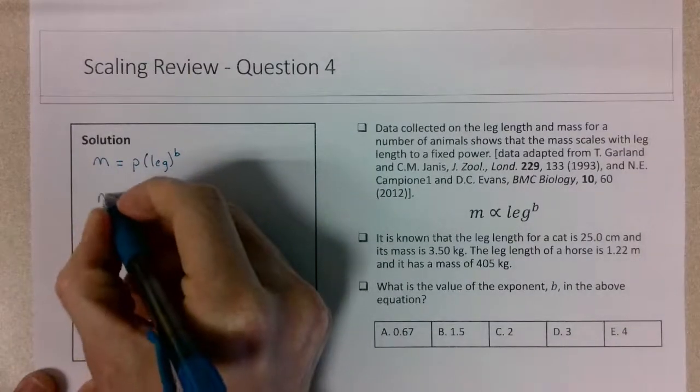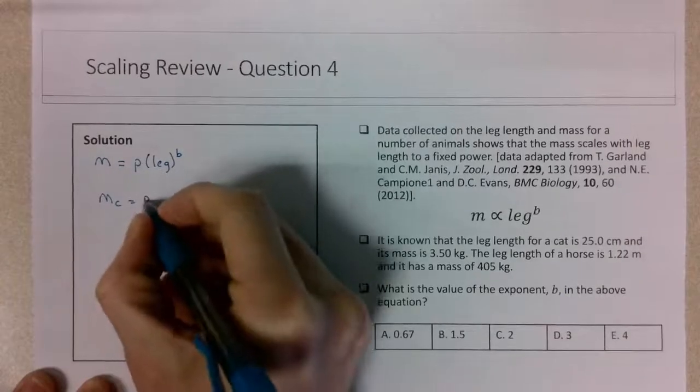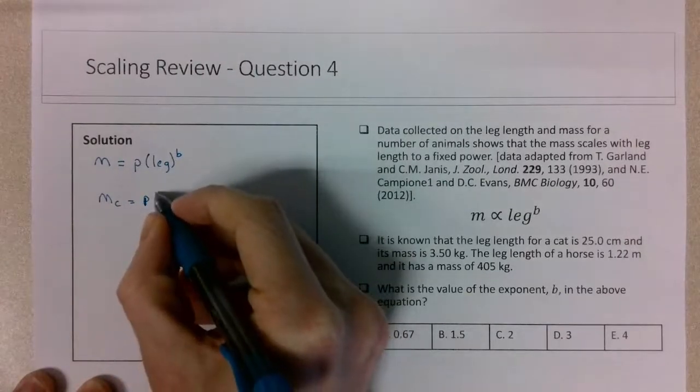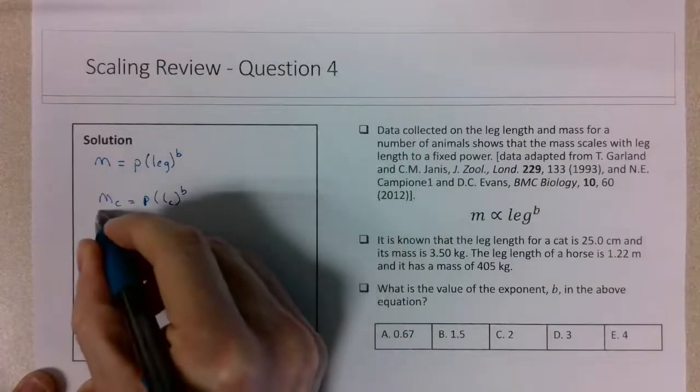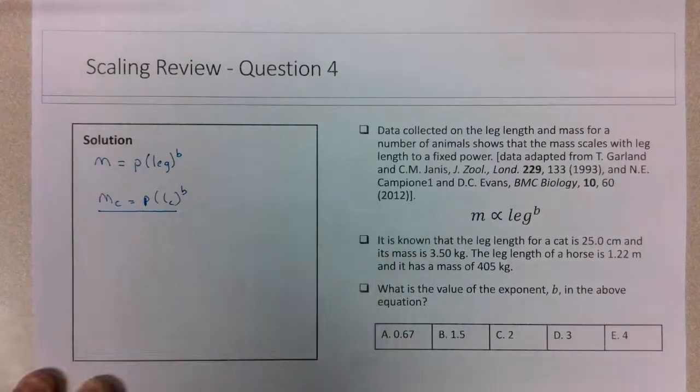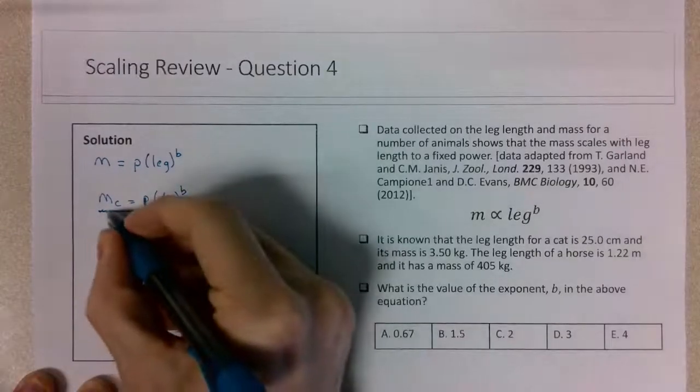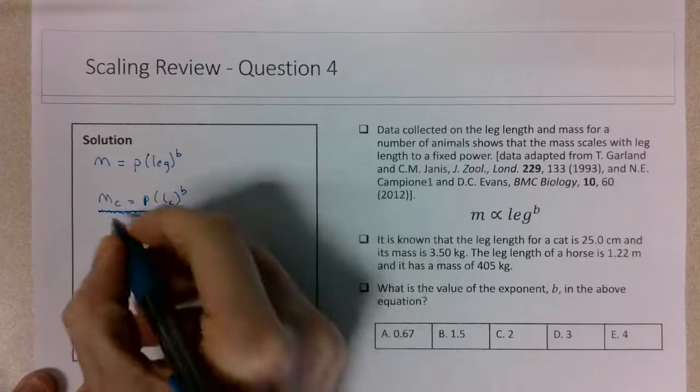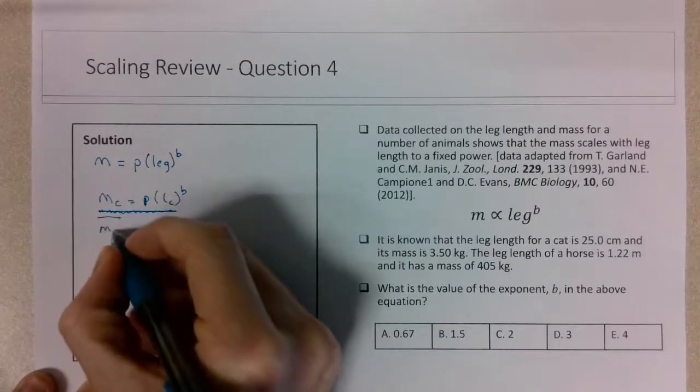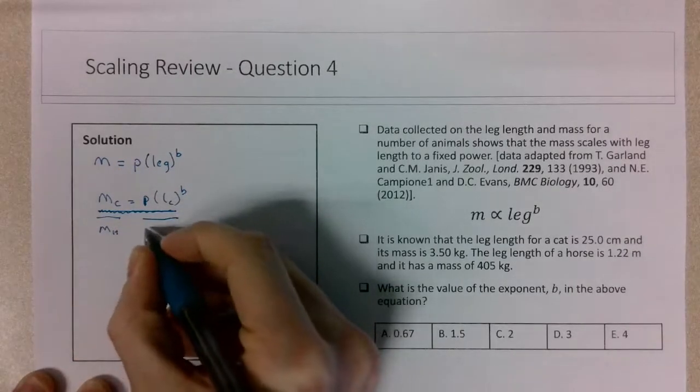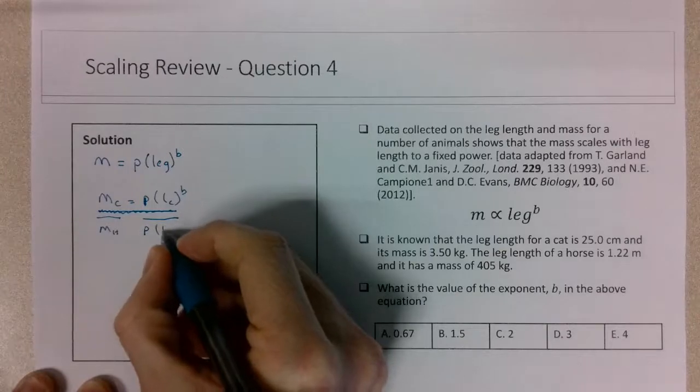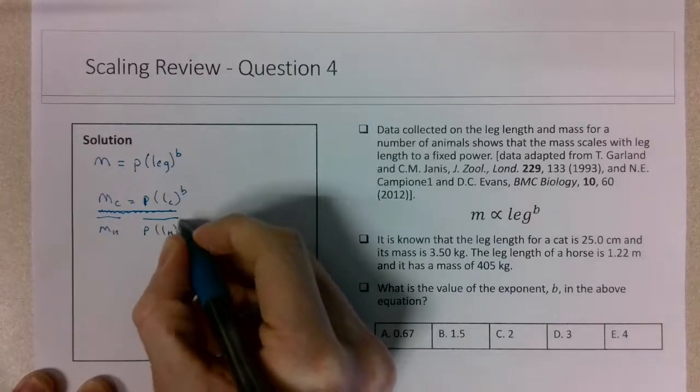The mass of the cat equals this proportionality constant times the leg length of the cat raised to b, all divided by m of the horse, which equals the proportionality constant times the leg length of the horse raised to b.